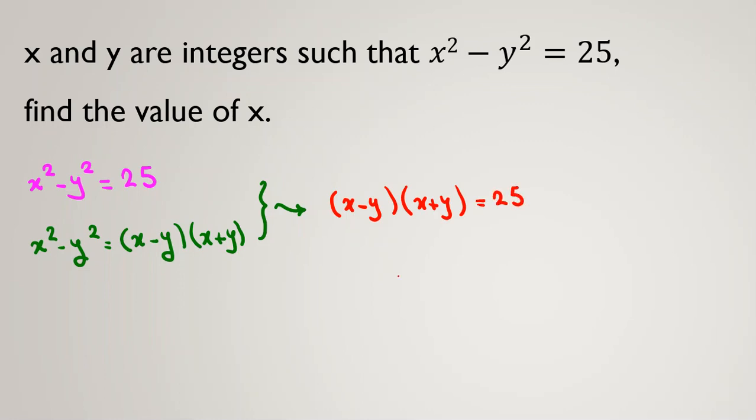If we combine these two results, then we can say (x - y)(x + y) = 25. And if I write all the cases, it can be 1 times 25, let's consider first positive cases: 5 times 5, 25 times 1, and then negative: -1 times -25. If one of them is negative, the other should also be negative. So -5 times -5, and -25 times -1.